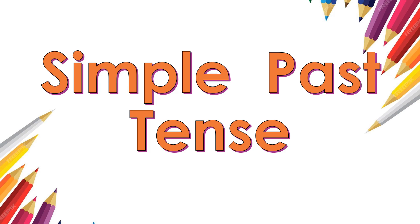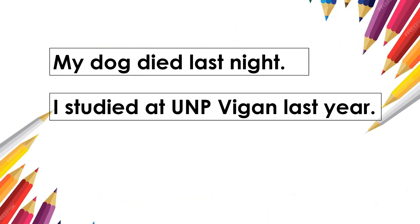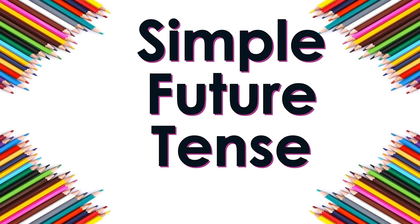Simple past tense. Verbs that show actions or events done in the past. Examples: My dog died last night. I studied at UNP Vegan last year.